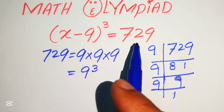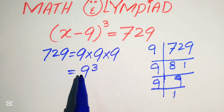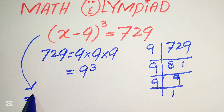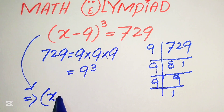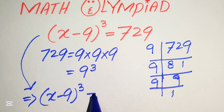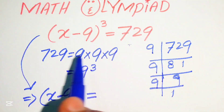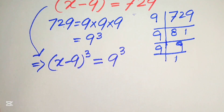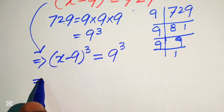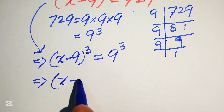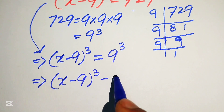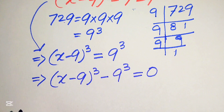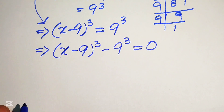Now we replace 729 with 9 cubed so that our equation becomes (x - 9)³ = 9³. We then move 9 cubed to the left-hand side and write it as (x - 9)³ minus 9³ equals 0.